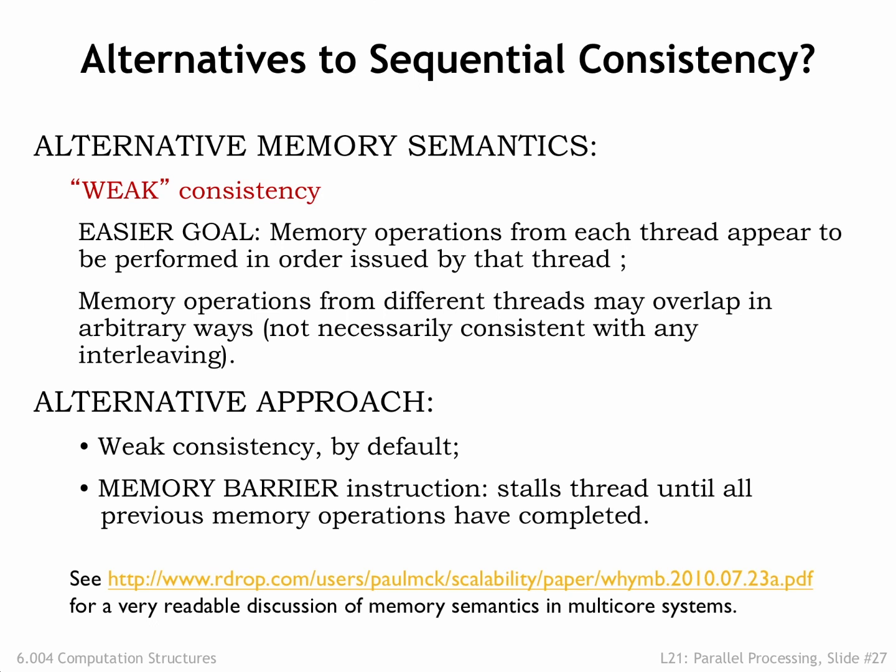Note that our multi-core cache doesn't itself guarantee even weak consistency. A thread that executes write X, write Y will update its local cache, but later cache replacements may cause the updated Y value to be written to main memory before the updated X value. To implement weak consistency, the thread should be modified to: write X, communicate changes to all other processors, then write Y. In the next section, we'll discuss how to modify the caches to perform the required communication automatically.